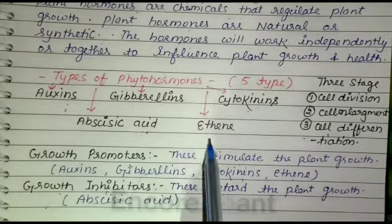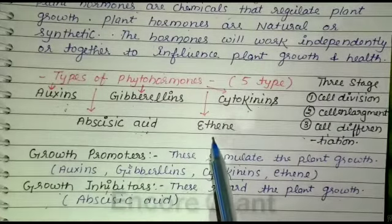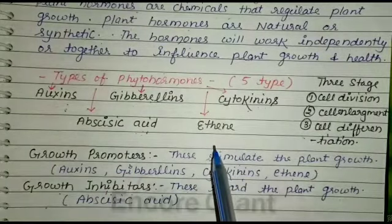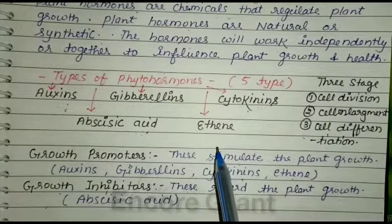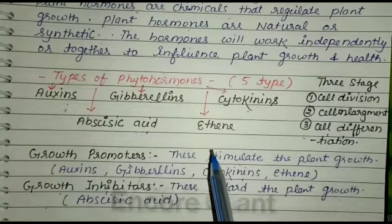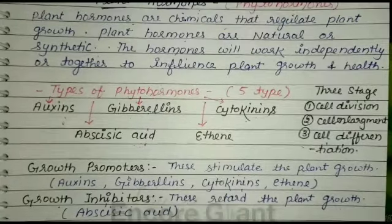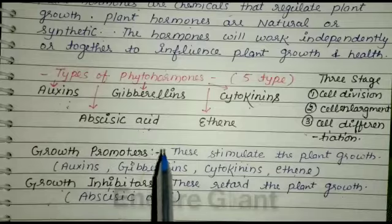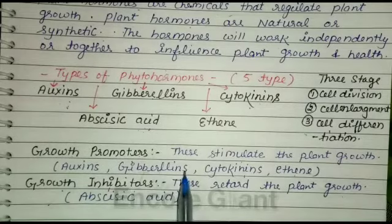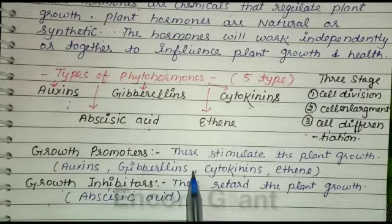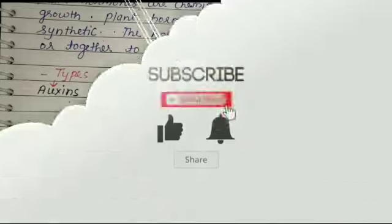The last plant hormone is ethene. Ethene promotes growth and ripening of fruits and helps in breaking the dormancy in buds. The functions of phytohormones are now completed. In the next video we will discuss plant movements.